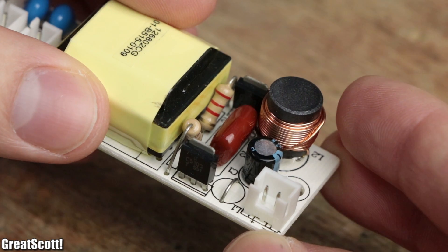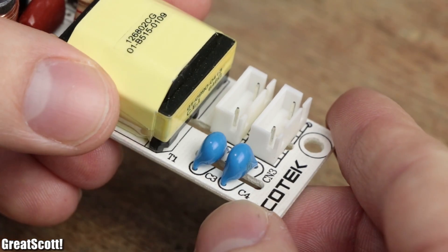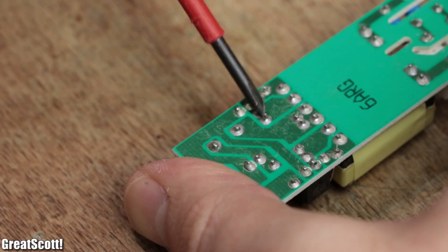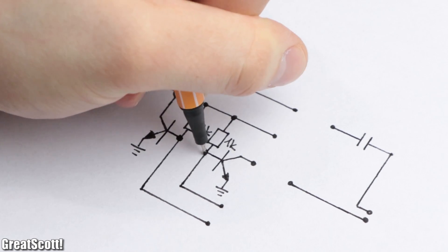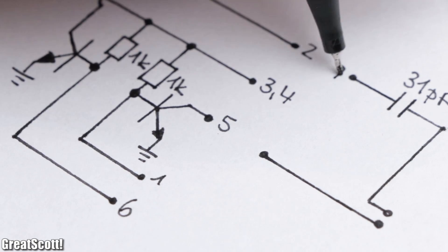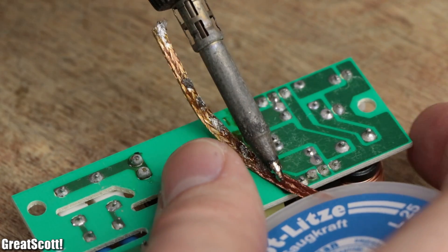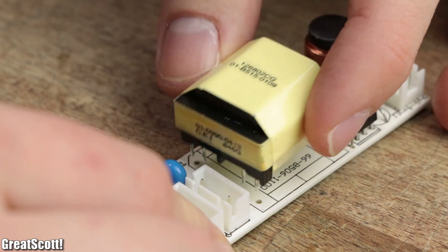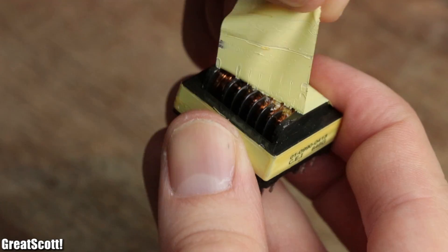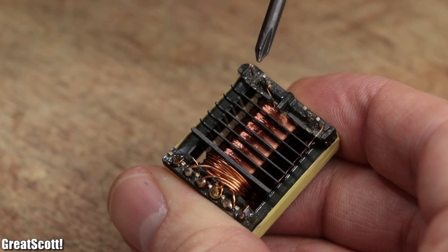Since the circuit only consists of a handful of components, I followed the PCB traces in order to create a rough schematic of the circuit. The only mystery here were the windings of the utilized transformer. So I had no choice but to remove it carefully from the circuit and remove its protective tape.